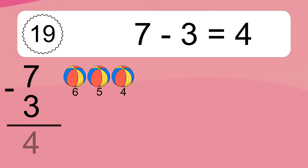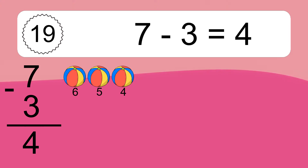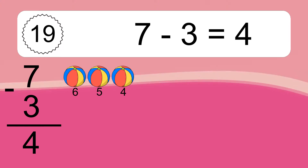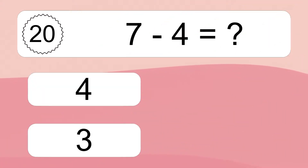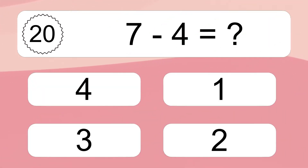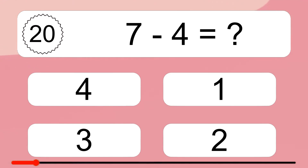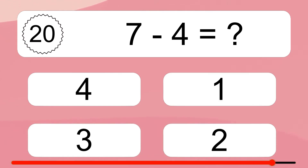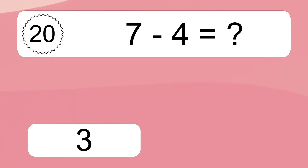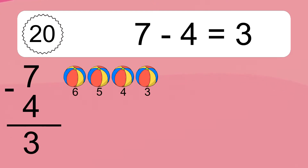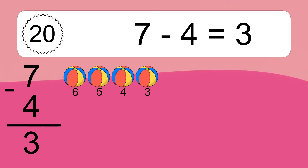7 minus 3 equals 4. Let's count it: 6, 5, 4. 7 minus 4 equals what? 7 minus 4 equals 3. Let's count it: 6, 5, 4, 3.